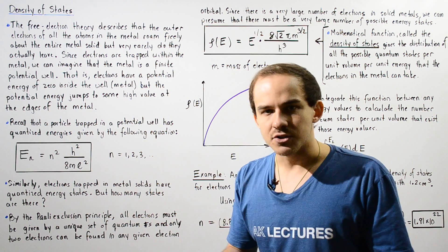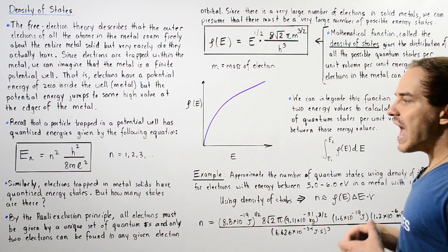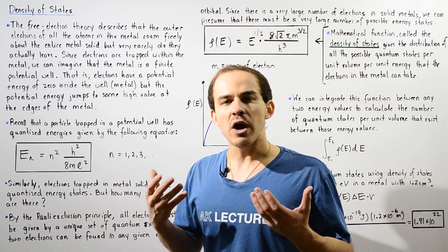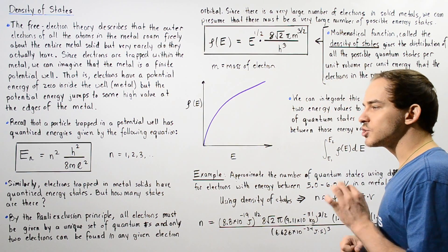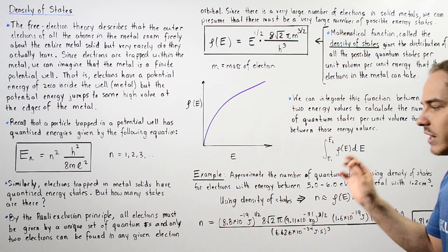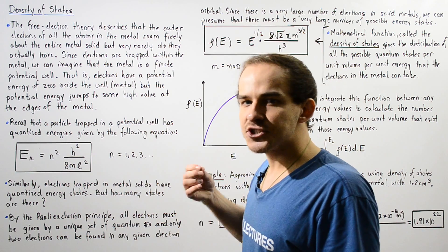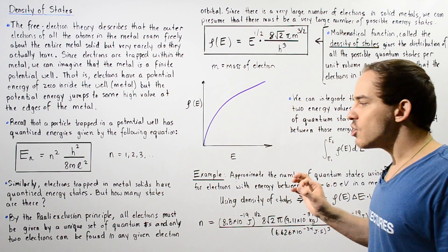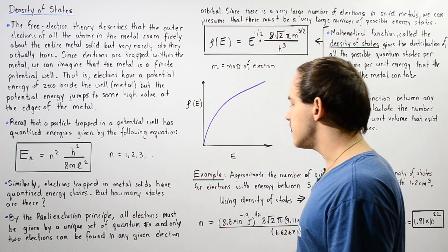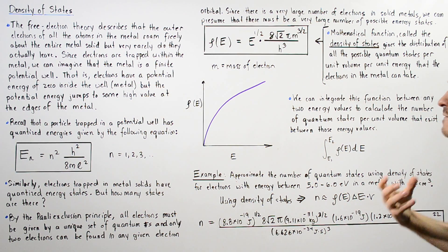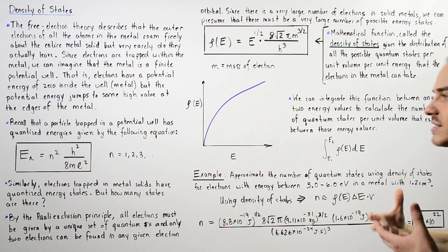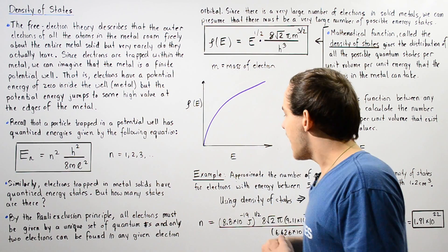Similarly, electrons trapped inside our metal solids have quantized energy states. But the question is, how many quantized energy states actually exist? To answer this, recall the Pauli Exclusion Principle: all electrons must be described by a unique set of four quantum numbers, and only two electrons can occupy any given electron orbital. Since we have a very large number of electrons within our total metal, we must have a very high number of quantum states.